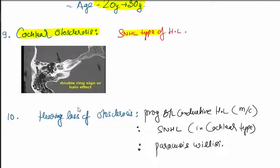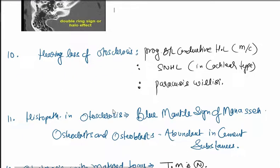Cochlear otosclerosis shows SNHL type of hearing loss. What kind of hearing loss in otosclerosis? Most common is progressive bilateral conductive hearing loss. Next is SNHL sensory neural hearing loss in cochlear type. Third hearing loss is paracusis willisii.